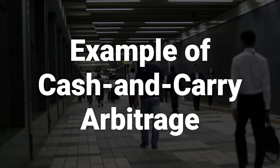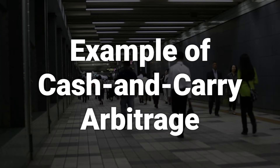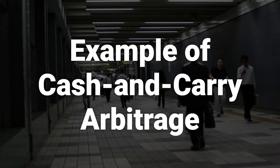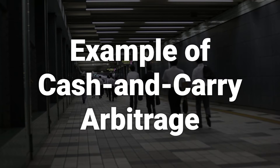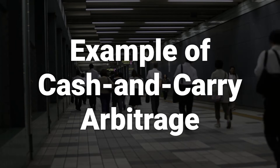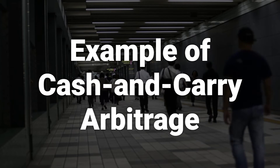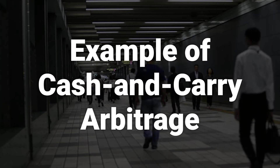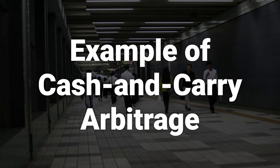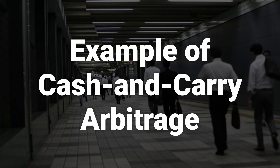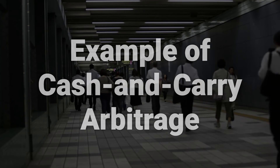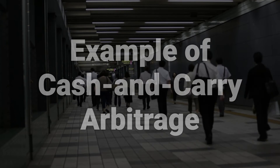For example, if an asset trades at $100 in the spot market and the one-month futures contract is priced at $104, with carrying costs of $3, an arbitrageur can buy the asset at $100 and sell the one-month futures contract at $104. By delivering the asset against the contract at expiration, the trader ensures a riskless profit of $1.